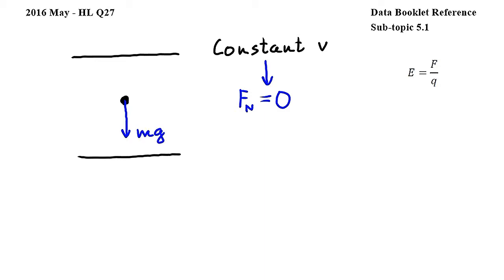And the second is the force exerted by the electric field. Now, since the net force is equal to zero, the force exerted by the electric field has to point in the opposite direction to the gravitational force, and it has to be equal to the gravitational force.